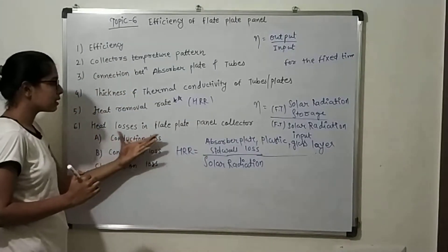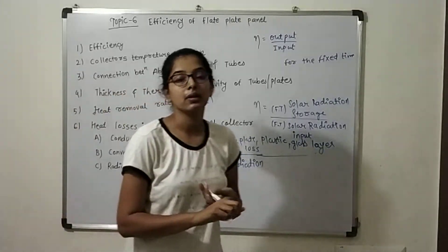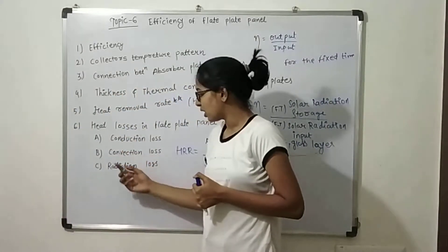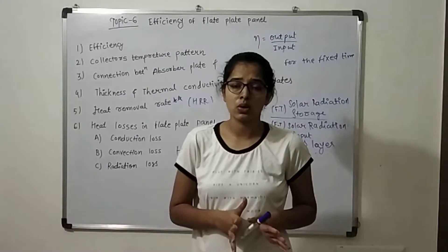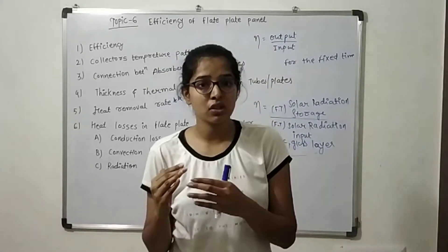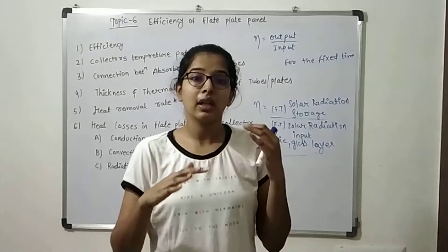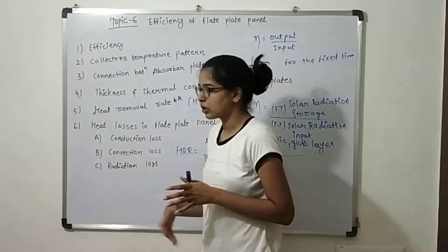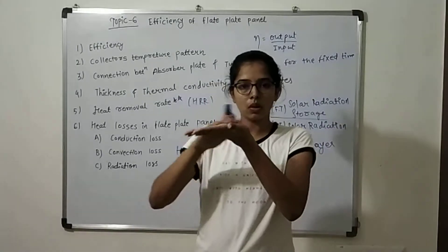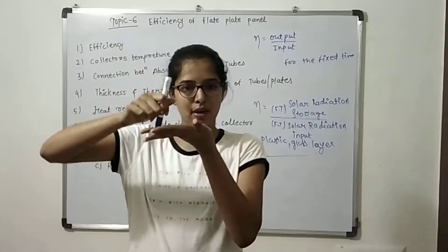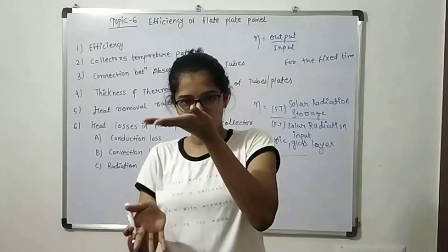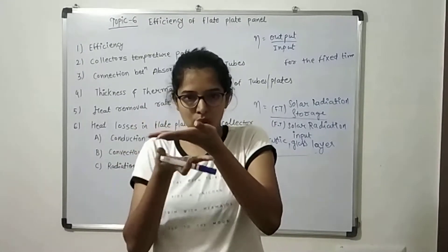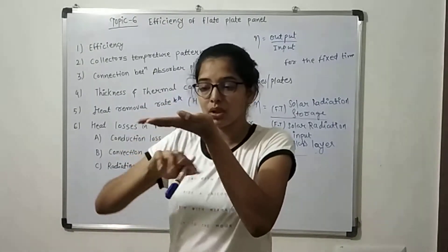Heat loss is in flat plate. Conduction, convection, radiation. Conduction, convection, radiation. These are the same. But in this case, you can do this. Conduction. There is a solar radiation. The solar radiation is removed. You can do insulation. You can see a plane.